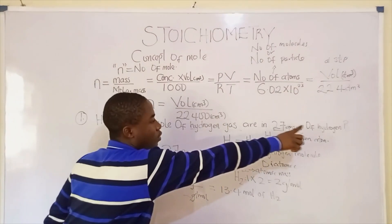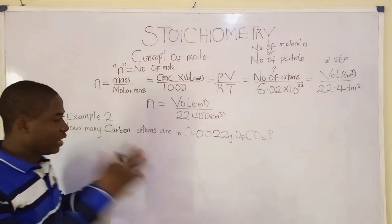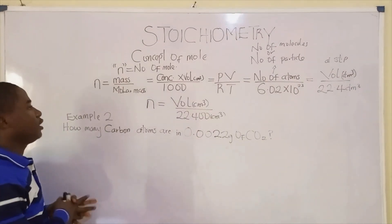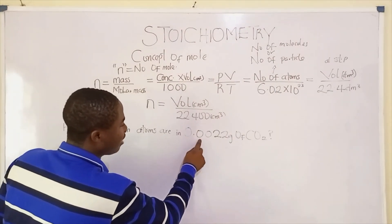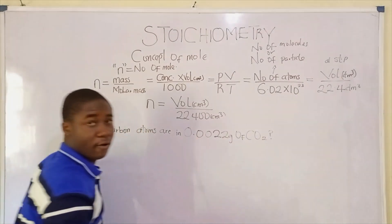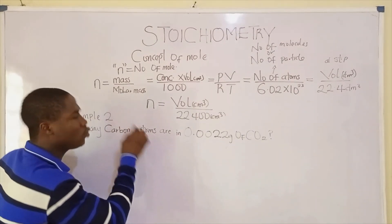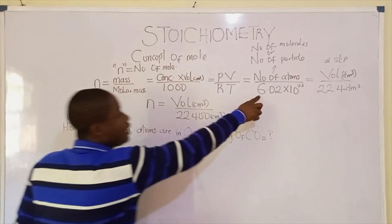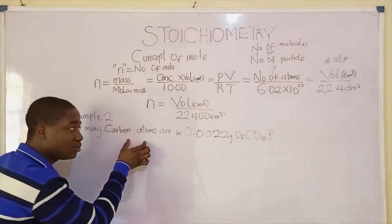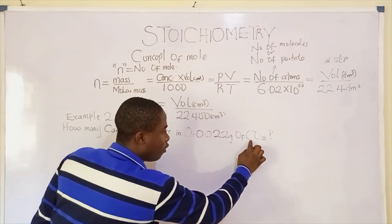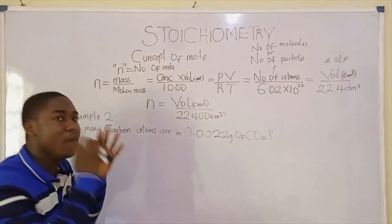So the number of moles present in 27 grams is 13.5 moles of hydrogen gas. Now let's move to the next question: how many carbon atoms are in 0.0022 grams of carbon dioxide (CO₂)? They are asking for carbon atoms, which is number of atoms, so we should think of the atoms/Avogadro's formula.